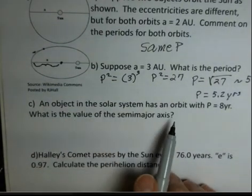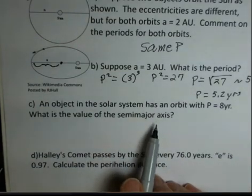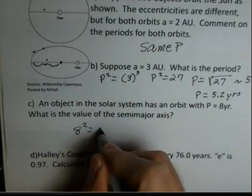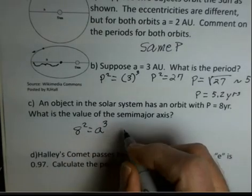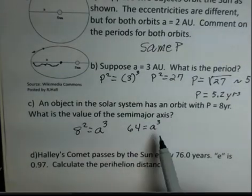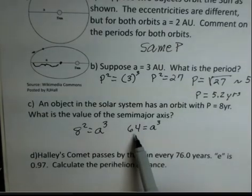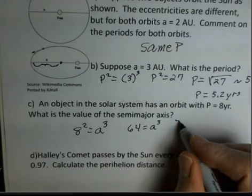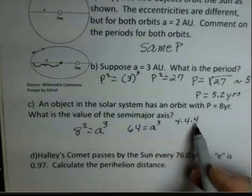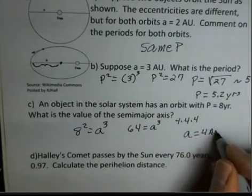Here we have another calculation. An object in the solar system has an orbit with a period of eight years. What's the value of the semi-major axis? P is 8 years. So P² = A³. 8² is 64 = A³. Can you think of a number where you multiply it by itself three times and you come up with 64? Perhaps you're guessing 4 × 4 × 4. 4 × 4 is 16. 16 × 4 is 64. So the value of A is four astronomical units.